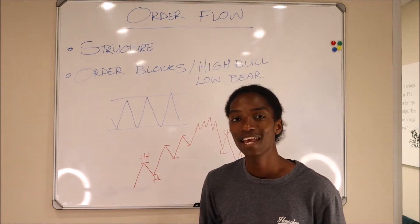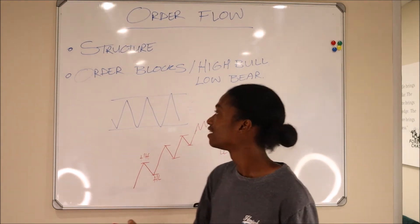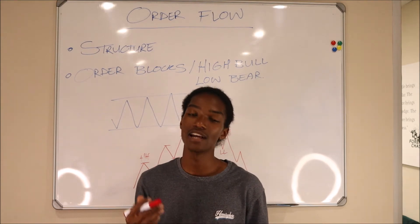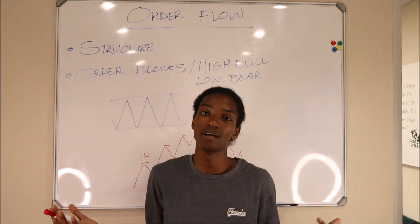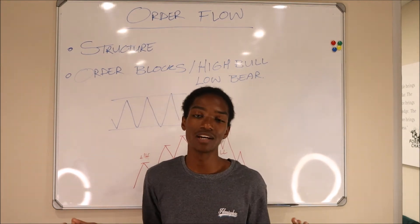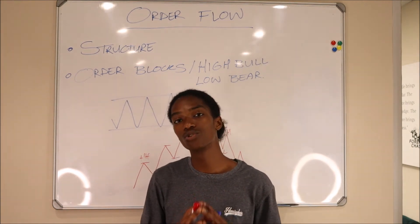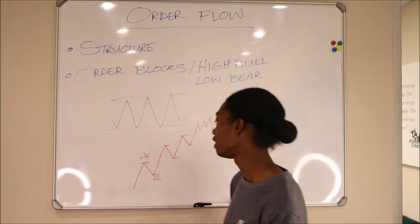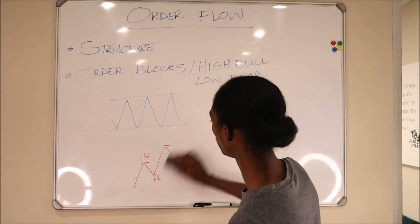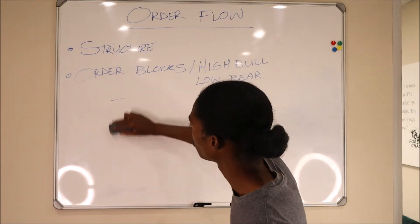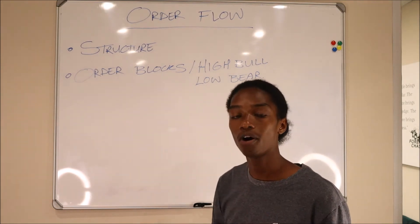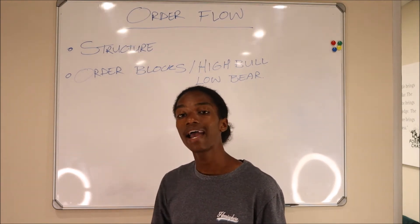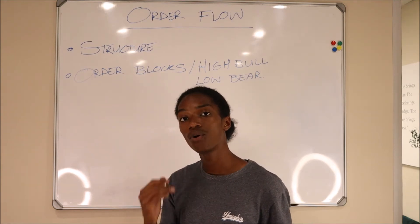Now going into order blocks. Order blocks are essentially high bull candlesticks and low bear candlesticks - just depending on which term you want to use. Remember there are thousands of terms for these different things, but what I want us to do is understand the general idea of what is happening. An order block is a candlestick that was used to add orders into.